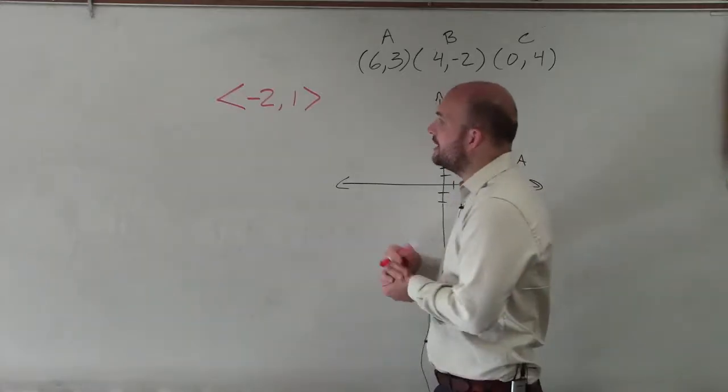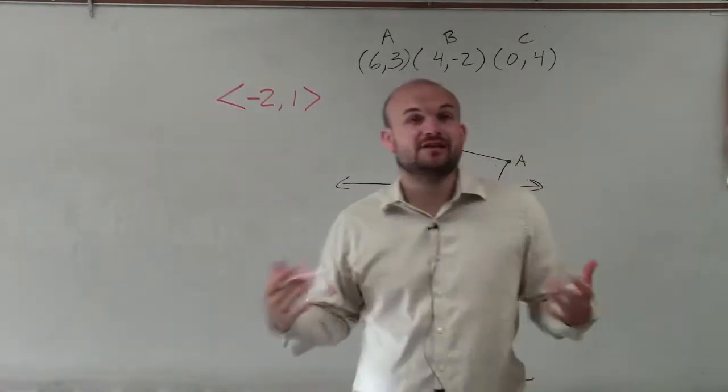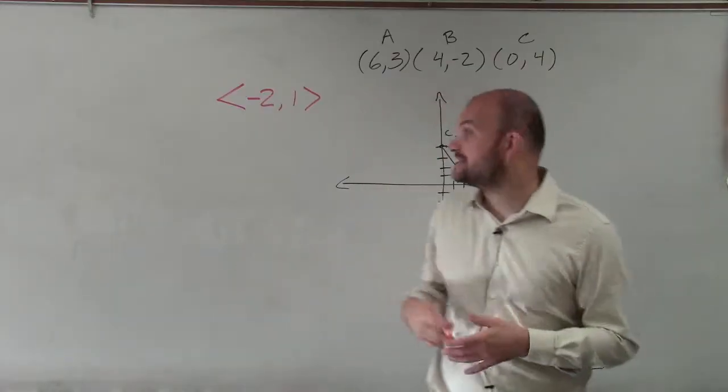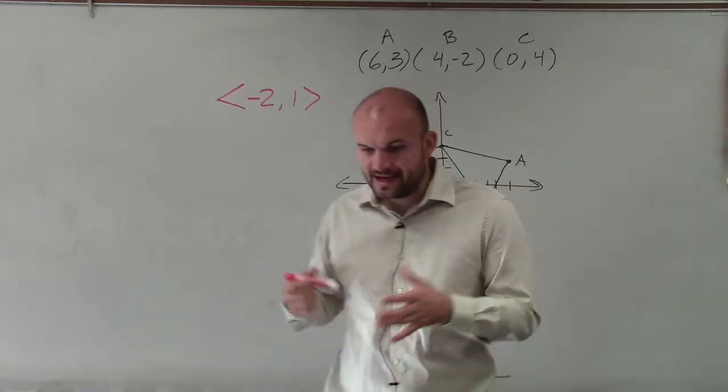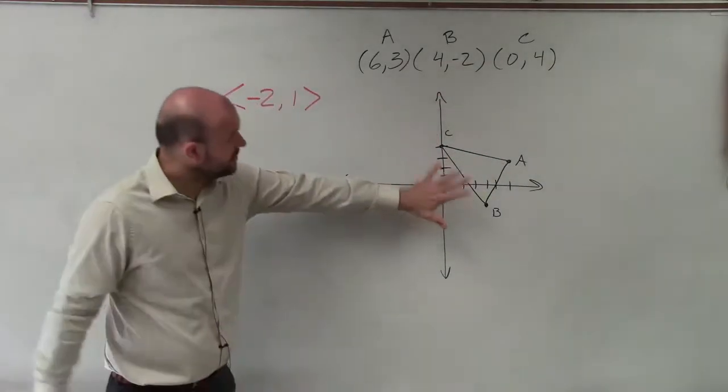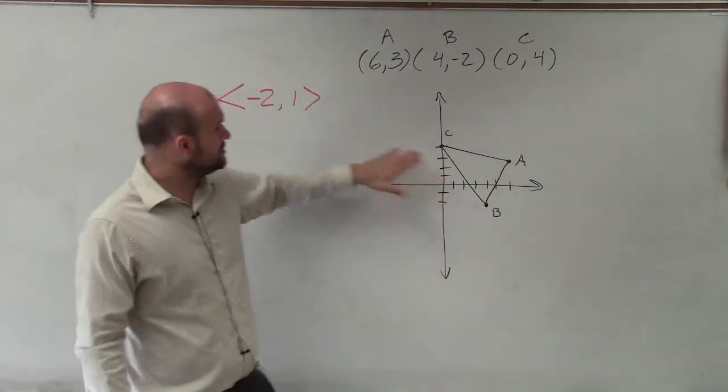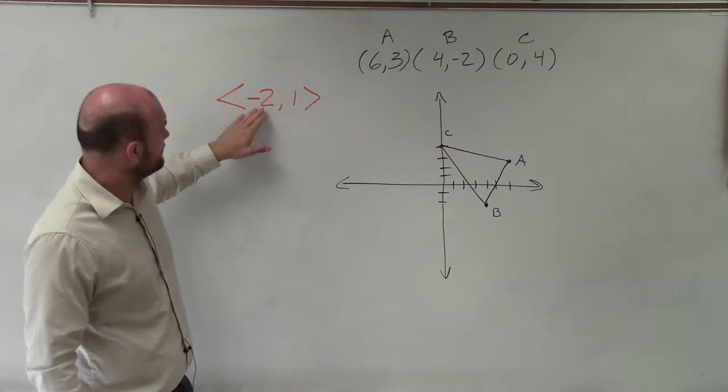Welcome. So what I'm going to do is show you how to provide the translation given the translation vector of negative 2, 1. And I graphed the figure up here based on the coordinates that were provided. And what I'm going to do is I'm going to transform this in a vector of negative 2, 1.